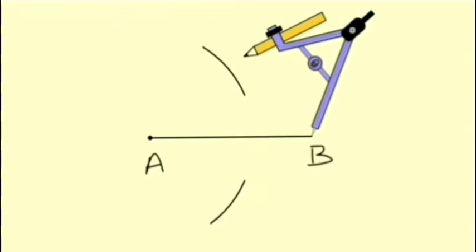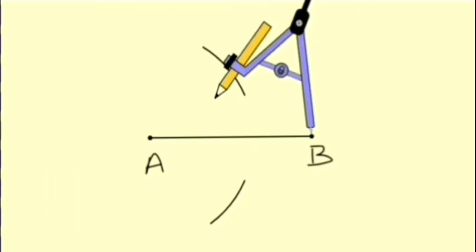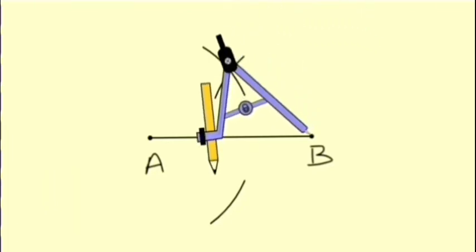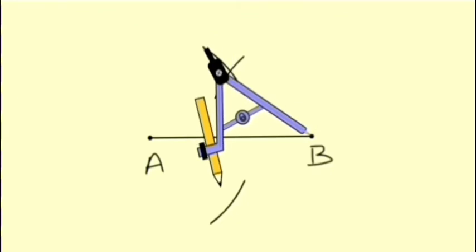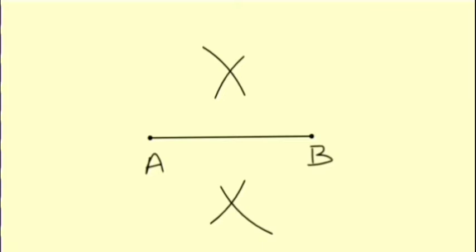And draw two more arcs, one intersecting the upper arc and other intersecting the lower arc. So you can see these two intersecting arcs.